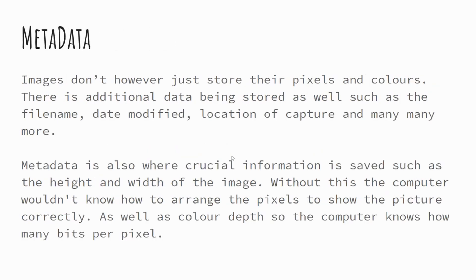Metadata is the final bit. Metadata is, in the simplest terms, data about data — and that phrasing has been accepted in exam answers in the past. It is ultimately all of the information about the file that the computer needs to handle the binary data appropriately. This includes things like the file name, when it was last modified, when it was created, location of capture, and in reference to images, the height and width of the image. You might also find what camera it was taken on — there are lots of things stored within metadata beyond just basic information.